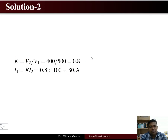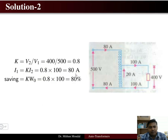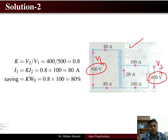The transformation ratio k = V2/V1 = 400/500 = 0.8. Since I1/I2 = V2/V1 = k, the primary current I1 = 0.8 × 100 = 80 ampere. We can now draw the circuit of a step down auto transformer with 500 volt primary and 400 volt secondary.